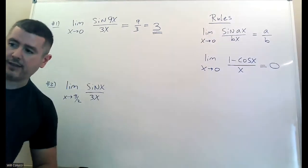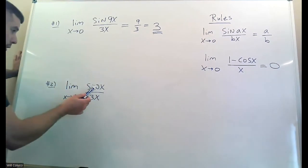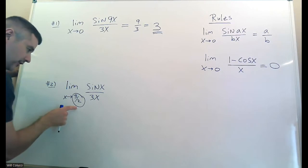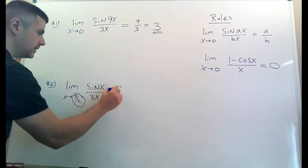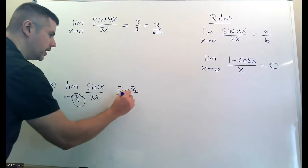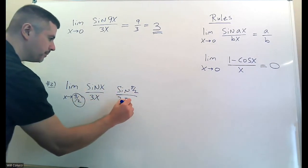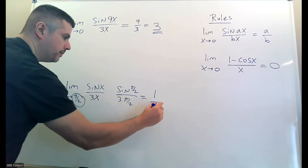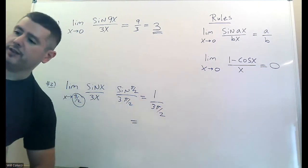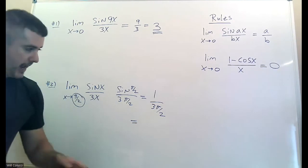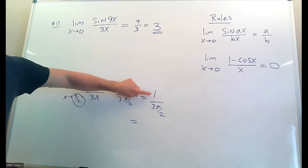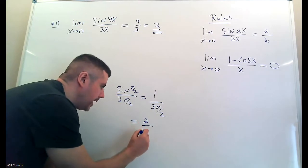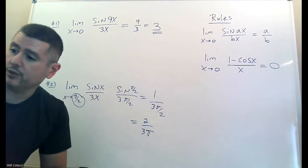This one — you might quickly say 'oh, use the rule,' but you'd get it wrong because the limit has to go to zero, and it's going to pi over two which is 90 degrees. Plug pi over two in for x wherever you see x. The sine of 90 is one. This leaves three pi over two. Keep-change-flip: flip the fraction so two goes to the top and three pi stays on the bottom.